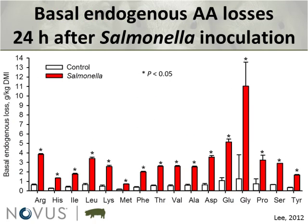Looking at basal endogenous losses — defined as the amino acids present at the ileum when feeding a nitrogen-free diet — we can ask: when animals are sick, can we call those basal losses truly basal? That's an interesting academic discussion. But by the standard definition, feeding a nitrogen-free diet, the amino acids present at the ileum are the basal endogenous nitrogen losses. Here we see a true p-value of 0.05: a drastic significant increase of several-fold — two, three, five, sometimes even tenfold — in the amount of endogenous nitrogen losses.